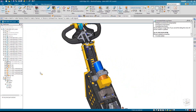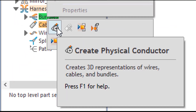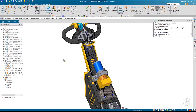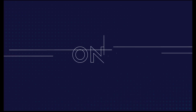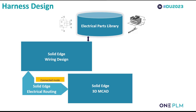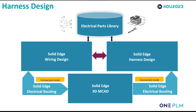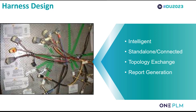To make sure the wires will successfully route through our model, we can create a physical conductor. To quickly recap what we've seen so far: we've shown you the ability to send our 2D schematic into the 3D environment and the ability to route those wires and bundles through the model using the connected mode. Now let's see how we can use the connected mode to create a harness in our 3D route.